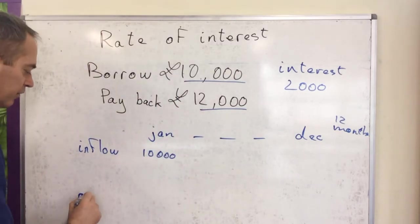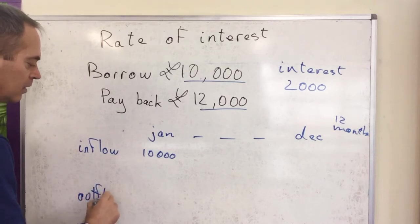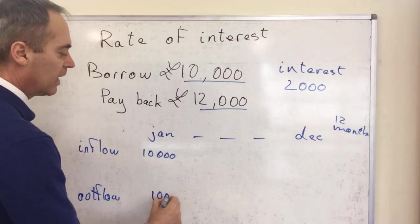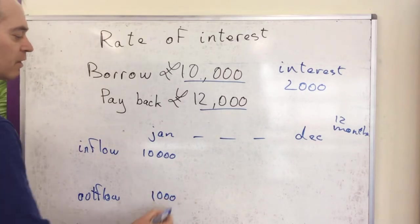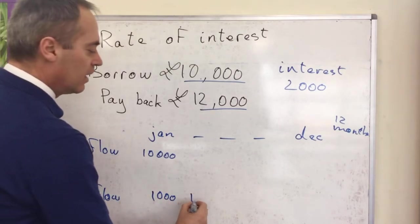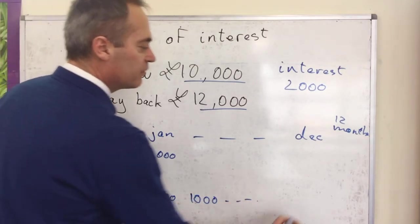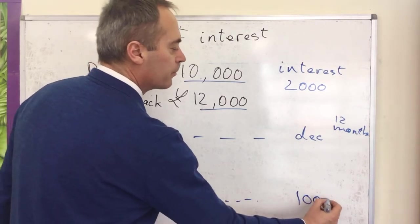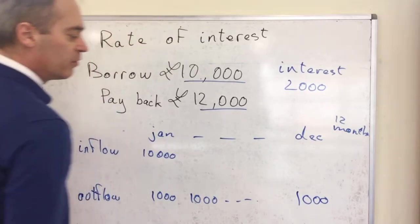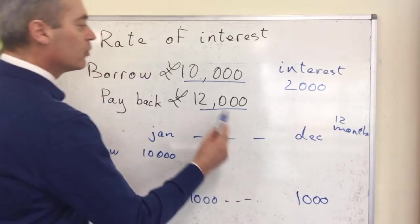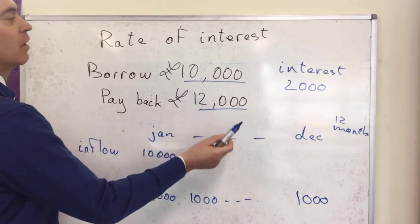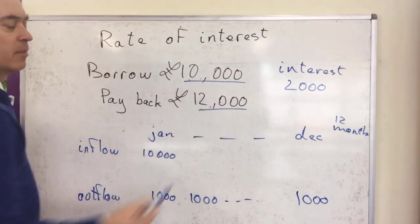But at the end of the month, you're going to pay the monthly contribution. So at the end of the month, you've got an outflow of £1,000 for part of a loan repayment plus the interest. And that £1,000 will be repeated 12 times and the last payment will be at the end of December. So by the end of December, the business would have paid the total of £12,000 back to the bank, made up of the loan itself plus the interest.